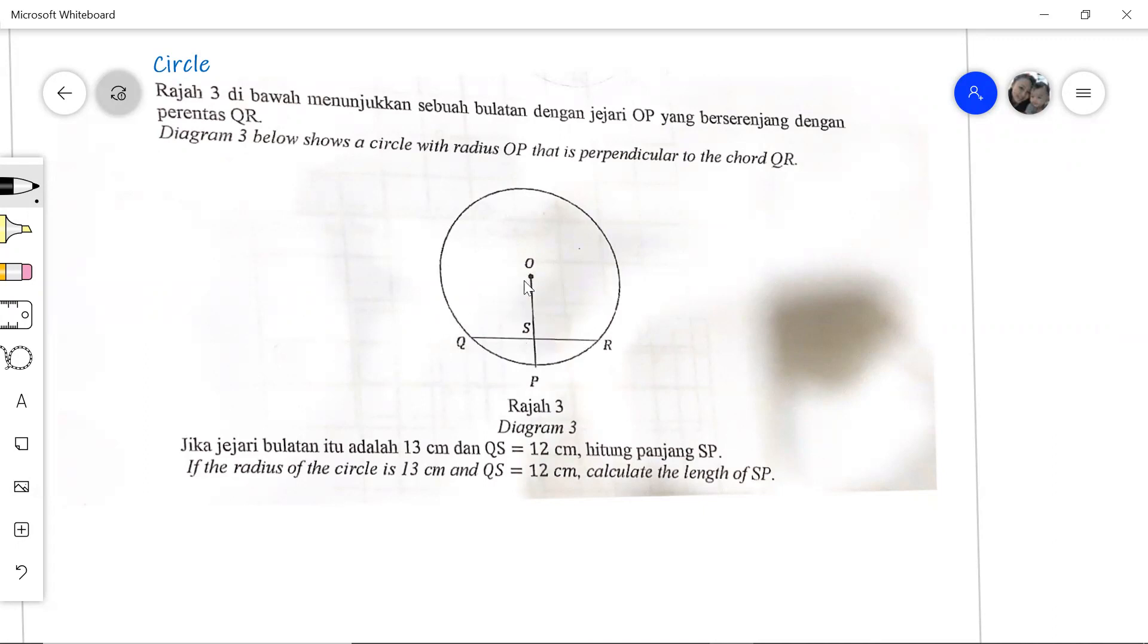You have to know that when a radius makes perpendicular to the chord, it will bisect the chord into two equal parts at 90 degrees. So it will bisect this. Let's see what other information that we have.